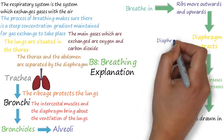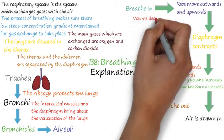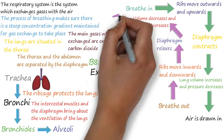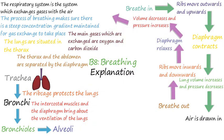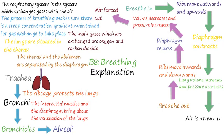When you breathe out, the ribs move inwards and downwards and the diaphragm moves up or relaxes. This means the volume decreases and pressure increases. This results in air being forced out of the lungs.